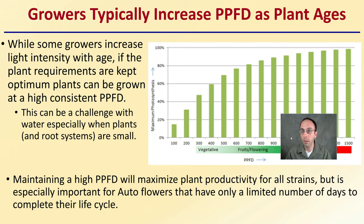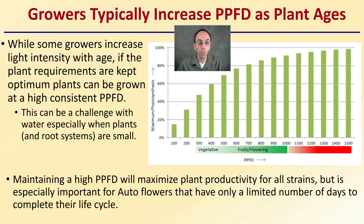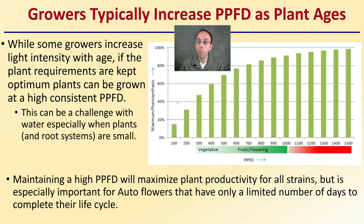Growers typically increase the PPFD as the plant ages — that's simply referring to the intensity of light. While some growers increase light intensity with age, if the plant requirements are kept optimum, plants can be grown at high consistent PPFDs. That stands for photosynthetic photon flux density. This can be a challenge with water, especially when plants and root systems are small, which is part of the reason why growers tend to increase that as plants age. As the graph here shows, the intensity increase from vegetative through flower could potentially be brought up much sooner.